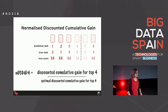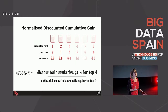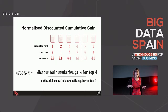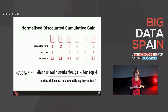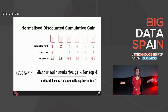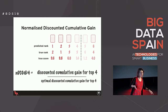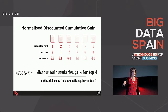Another common metric is NDCG at k, where k is an integer - you truncate your list and only compute it on the first k items. That allows for better comparison when in production you have queries that return potentially different numbers of documents. For one query you might get a million documents returned, for another only a thousand - so you might compute NDCG at a thousand to make them comparable.